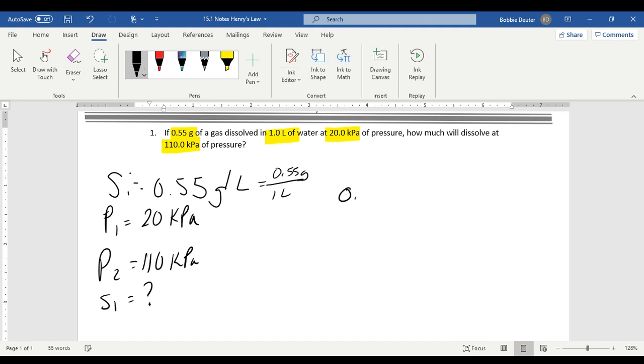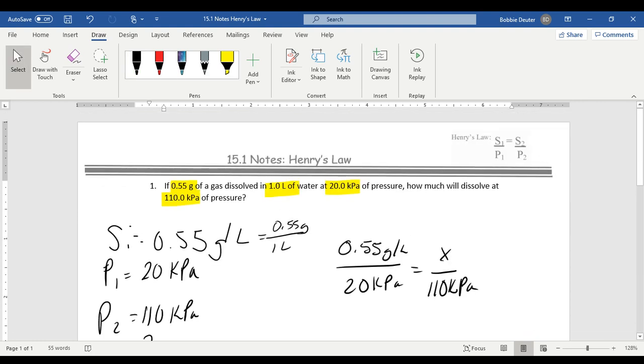So we would set this up just kind of as a proportion. 0.55 grams per liter over 20 kPa is equal to x over 110 kPa. And if we're looking at where we got those, that solution is right here. And you should probably write that down so that you can use that for the test. That would be a really good use of your time.